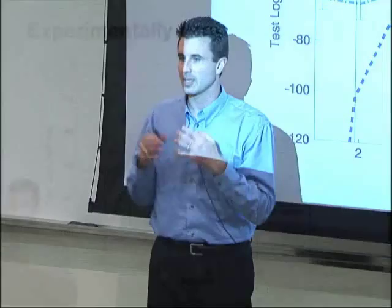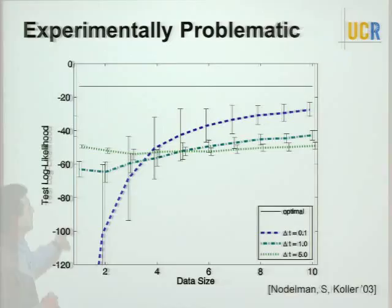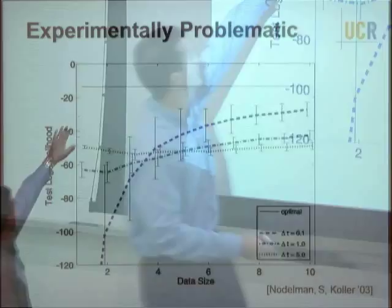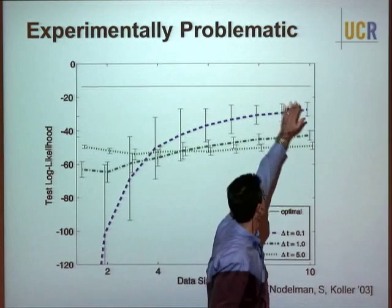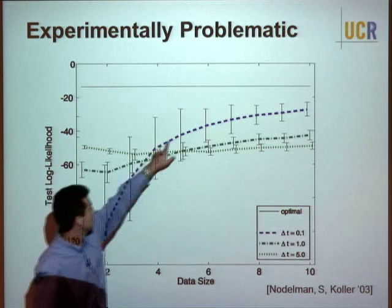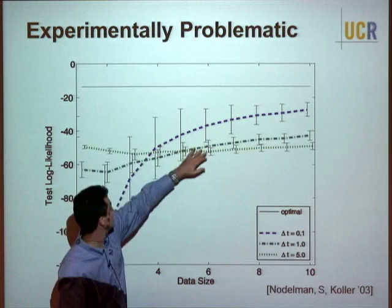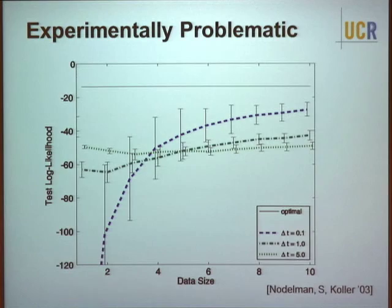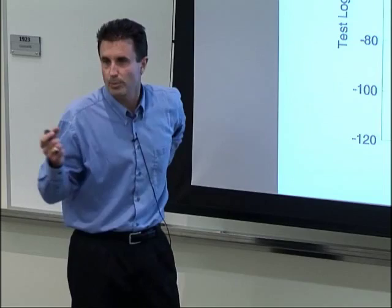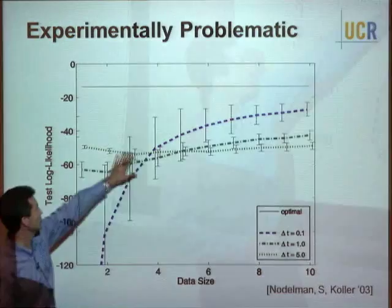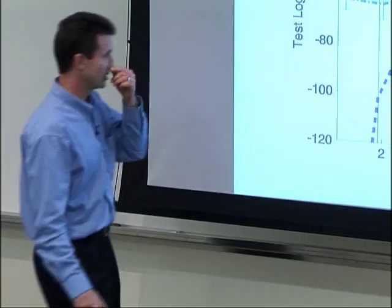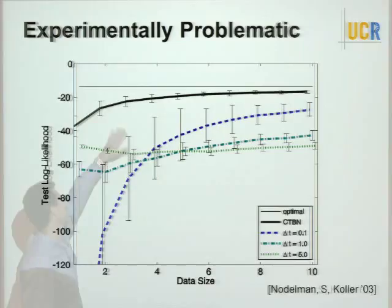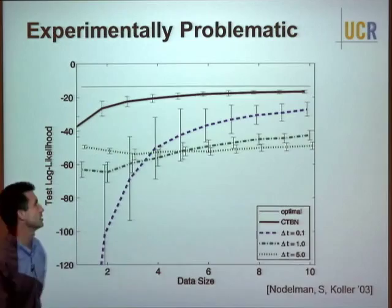More importantly, comparing how well each learned model predicts future data — a proxy for KL divergence to the true distribution — the correct time slice to select depends on how much data you have. In low-data regimes you do better with a coarser model; in high-data regimes you need a fine model. This is inconvenient. The continuous time method produces tight error bounds and beats all discrete time variants.